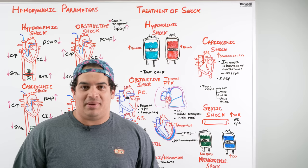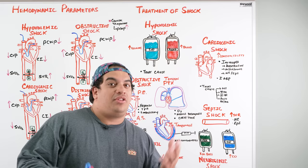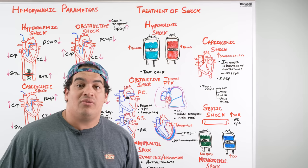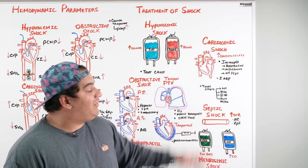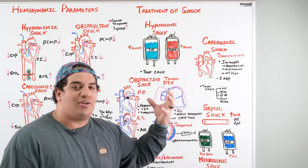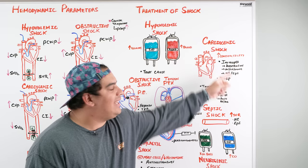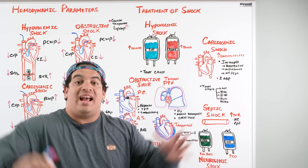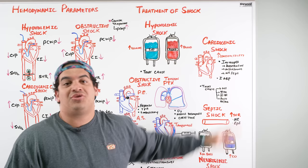Treatment of cardiogenic shock: treat the underlying cause — PCI for MI, cardioversion for tachyarrhythmia, pacing for bradycardia, valve replacement for acute aortic or mitral regurgitation. In the interim, use inotropes like dobutamine or milrinone to increase contractility. Epinephrine and norepinephrine increase both contractility and vasoconstriction. An intra-aortic balloon pump may be used if medications fail.